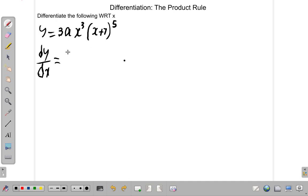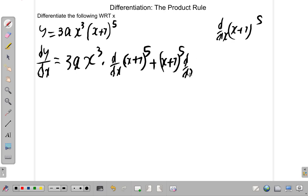So out of habit, I'll just hold 3ax³ as it is and then differentiate (x+7)^5. Now, when you differentiate (x+7)^5, let's do it over here. d/dx of (x+7)^5. We're going to do it over here. What we will do is d/dx of (x+7)^5, then we're going to plus. We hold (x+7)^5, then we find d/dx of 3ax³.